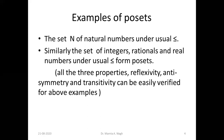For anti-symmetry, if a ≤ b and b ≤ a, that is possible only if a equals b. For transitivity, if a ≤ b and b ≤ c, then a ≤ c — for example, five is less than seven and seven is less than nine, so five is less than nine. So in the set of natural numbers, the usual ≤ satisfies all three properties. Similarly, the sets of integers, rationals, and real numbers under usual ≤ all form posets.